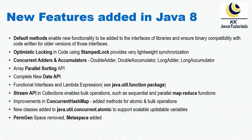Next is the Stream API in collections. All collection interfaces — like List, Set, and Map — have been enhanced with a lot of parallel processing methods. The Stream API in collections enables bulk operations such as sequential and parallel map-reduce functions. The Stream API is one of the most important features added in JDK 1.8, dealing with bulk operations.